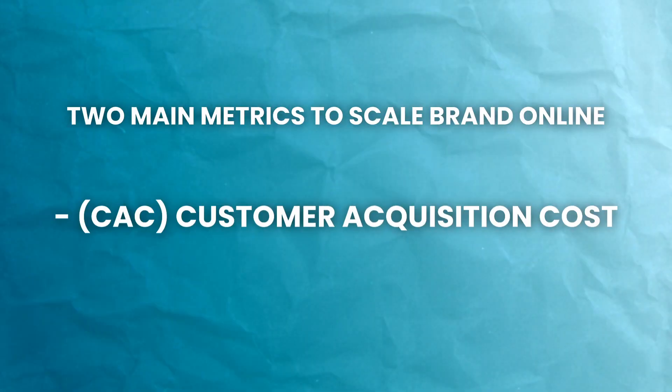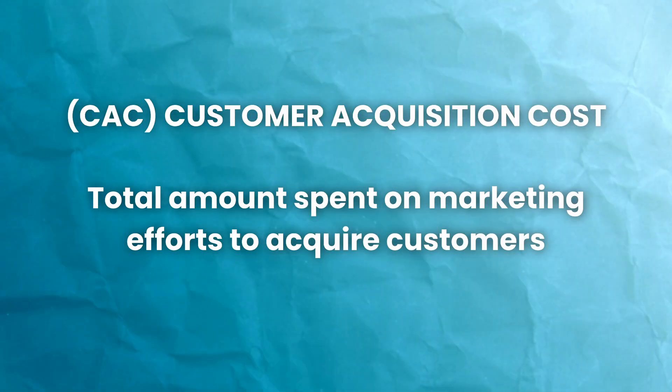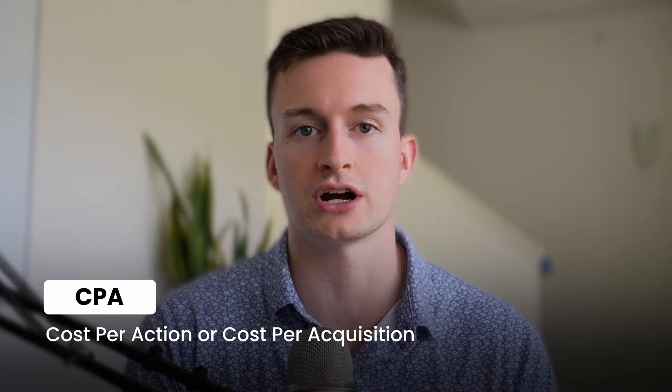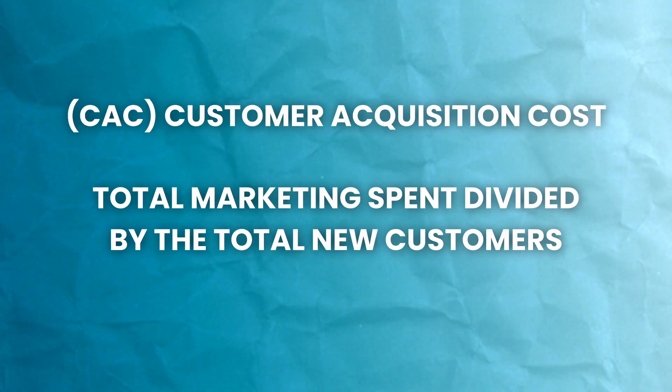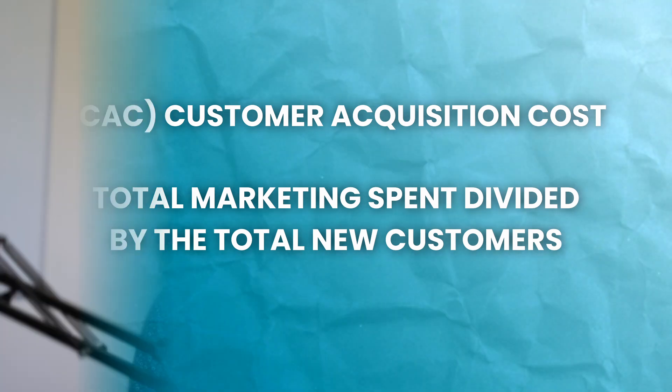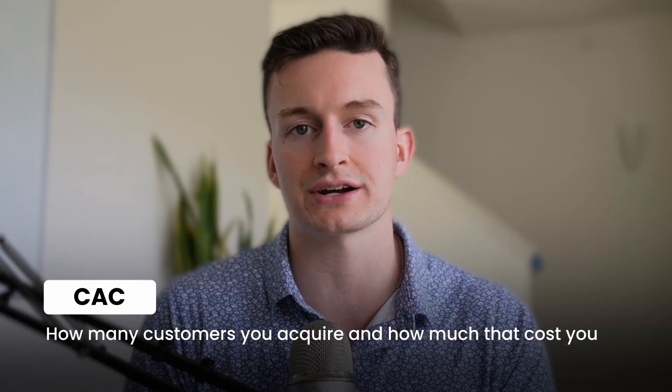First, let's start with CAC — customer acquisition costs. CAC, the way that I look at it, is the total amount of spend or marketing efforts to acquire a customer. CPA is something that you might see in your Facebook ads or Google ads — cost per action, cost per acquisition. But CAC is more all-encompassing. I do monitor those metrics within the ad account because that speaks to me on a per ad set, per campaign, per ad level basis. But CAC is more of a blended metric — your total marketing spend divided by the total new customers to see how many customers you acquire and how much that actually costs you.